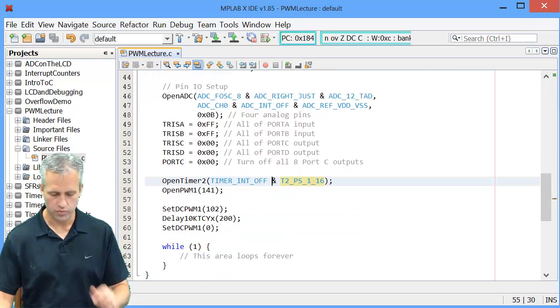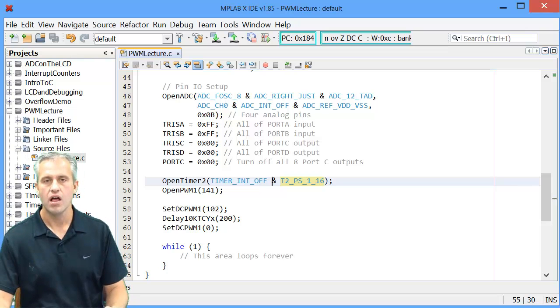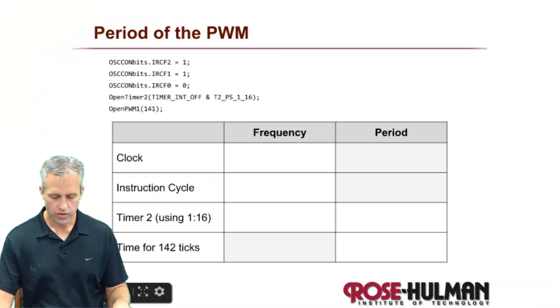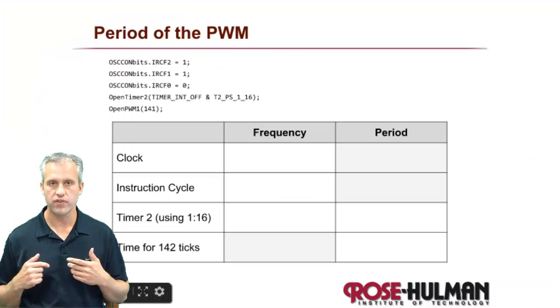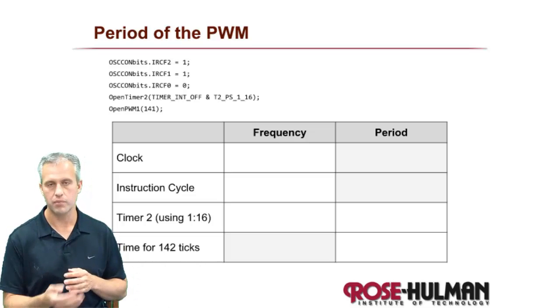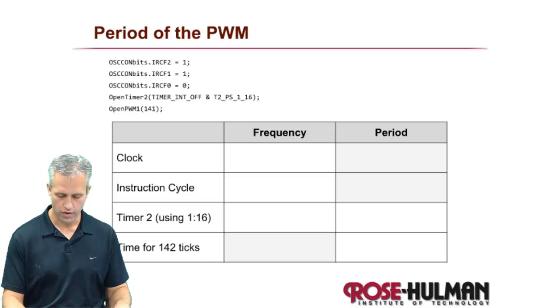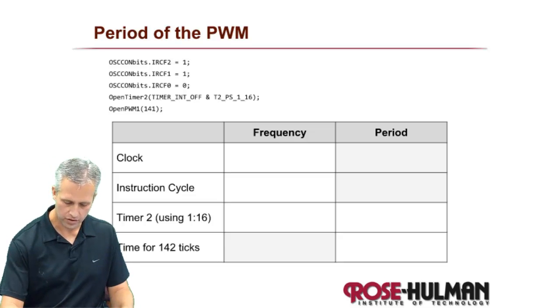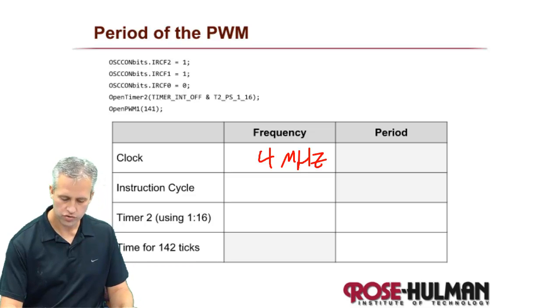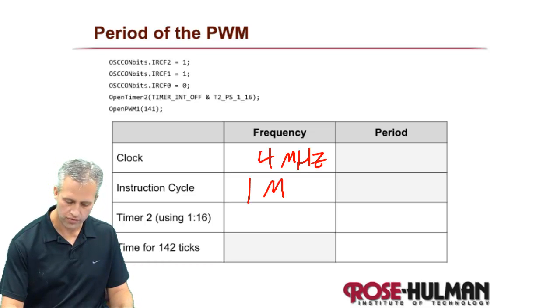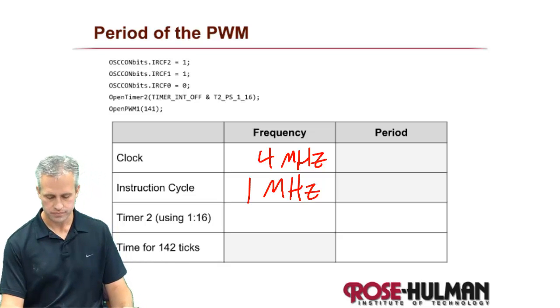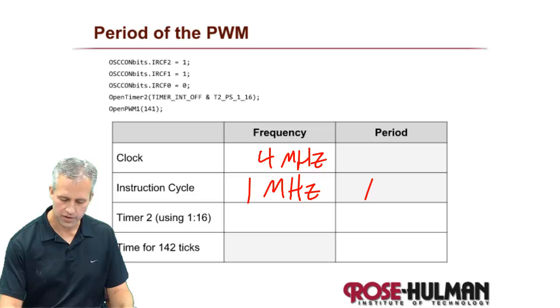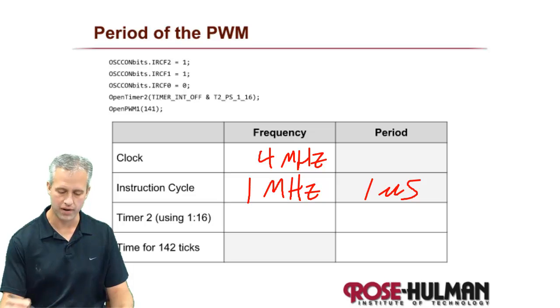But what we did was we set this up and you just copied it. Let's see if we can figure out what frequency it is and walk you through it. So the way this works is that first you've got to know what is the clock. So the clock we set up to our standard 1, 1, 0, which is 4 MHz. The instruction cycle is always one fourth of the clock, so 1 MHz.